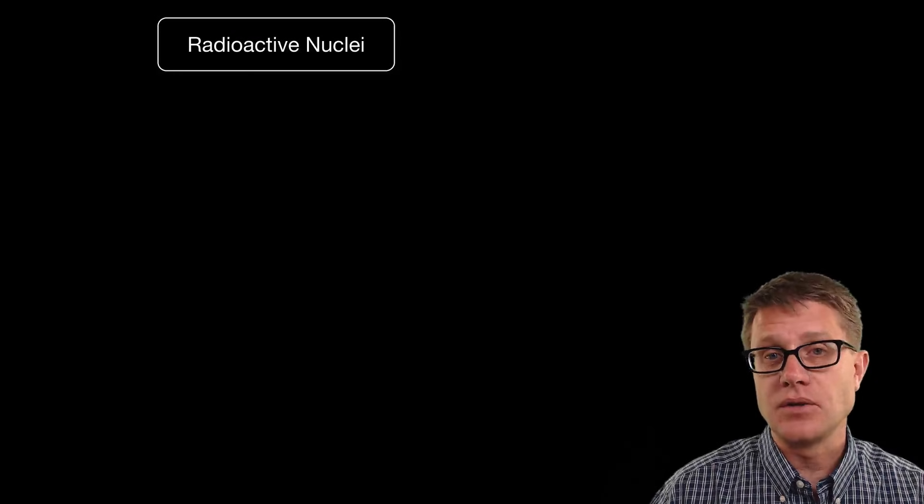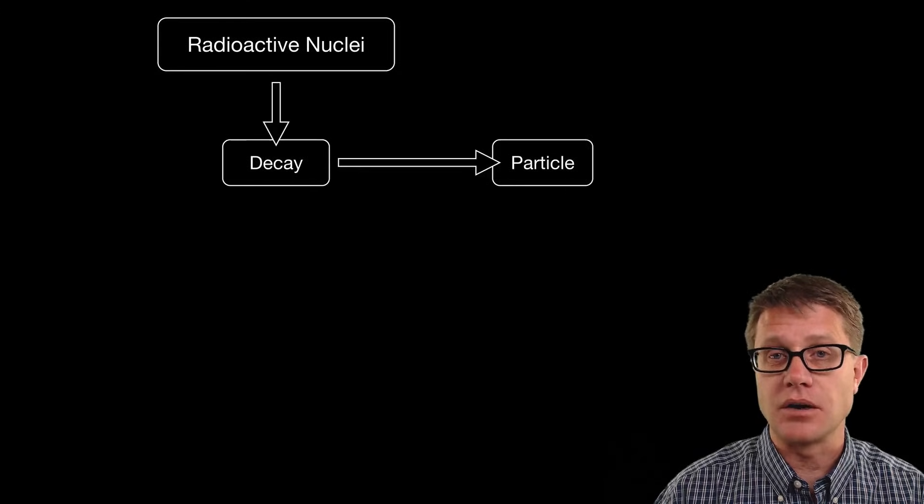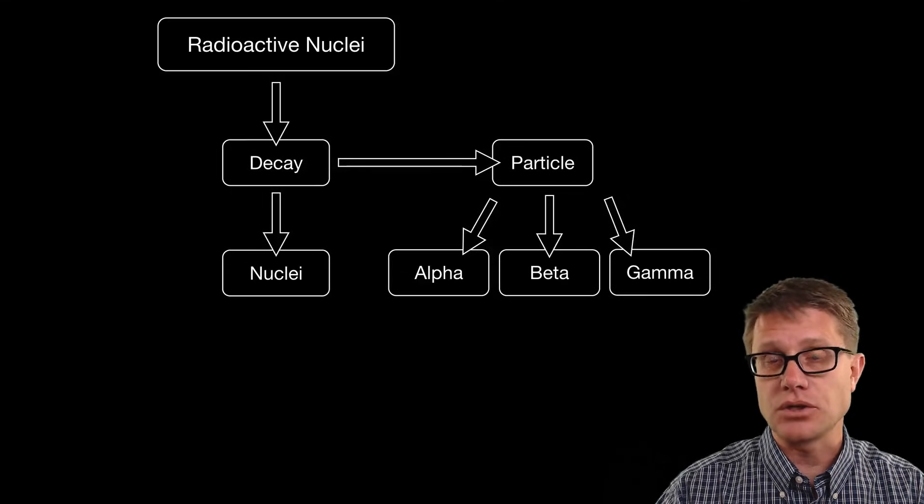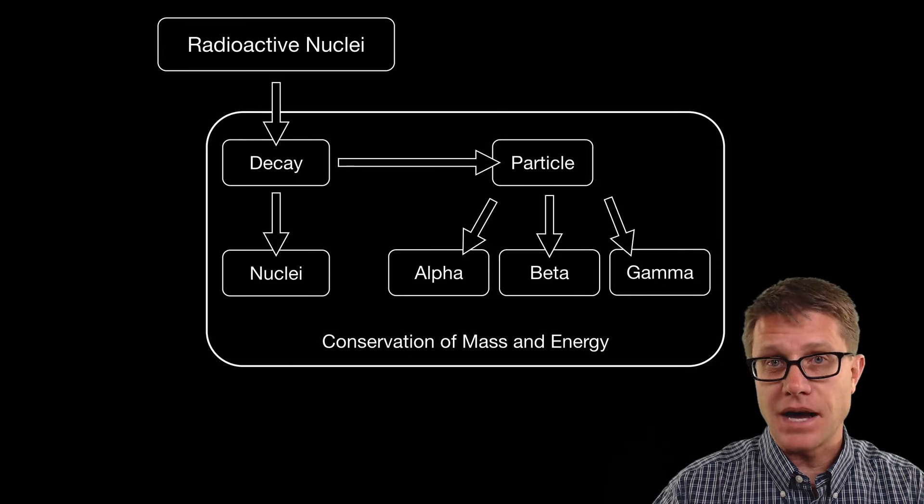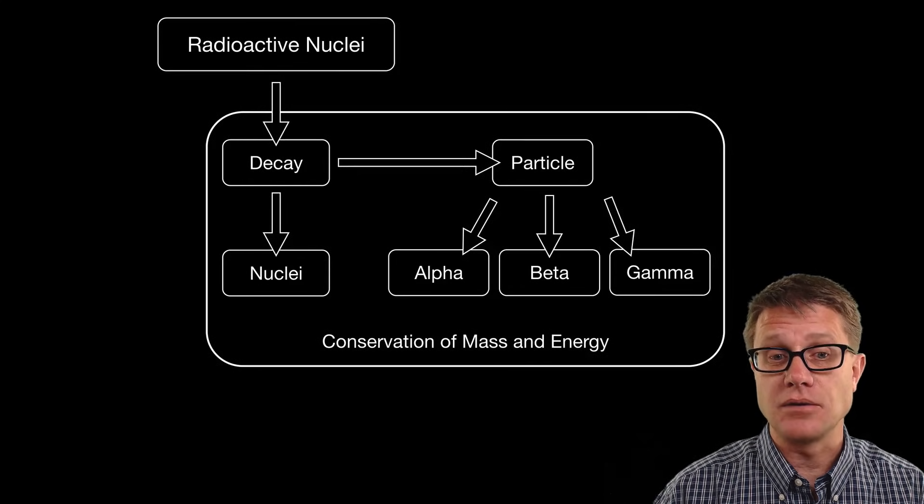Radioactive nuclei will decay. What does that mean? They are going to kick off some kind of a particle—it could be alpha, beta, or gamma—and then they are going to form a new, usually more stable, nuclei. In this radioactive decay, mass and energy are conserved. We have talked about that in previous videos.